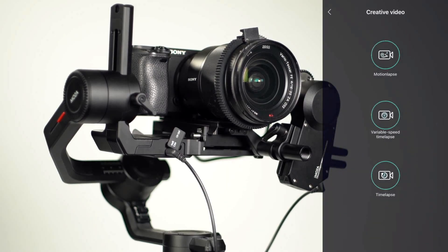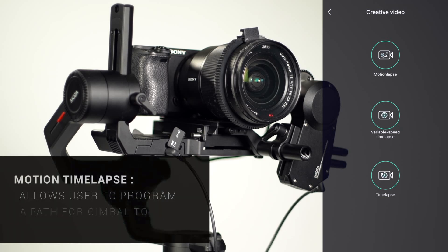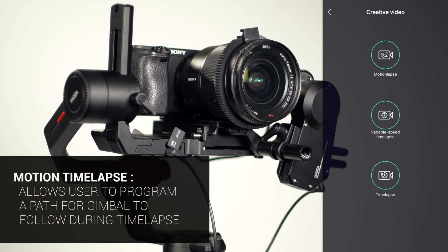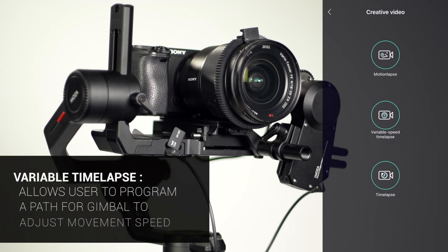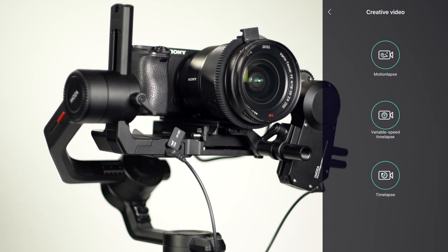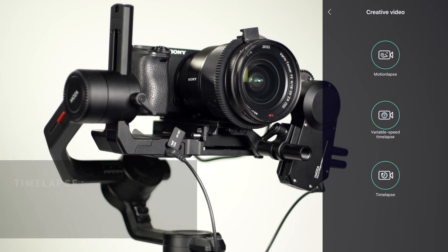The Moza Air 2 can perform three different types of time-lapse: motion time-lapse, variable speed time-lapse, and time-lapse. Motion time-lapse allows the user to program a path for the gimbal to follow during the time-lapse. Variable speed time-lapse allows the user to program a path where the gimbal can adjust its movement speed, and time-lapse for those wanting a stationary time-lapse function.